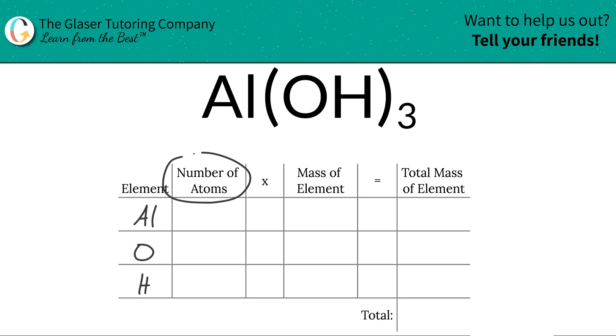Next is I'm going to write down the number of atoms of each element in this compound. So at the bottom of aluminum, there's an invisible one. So that means that there is one aluminum atom in aluminum hydroxide.